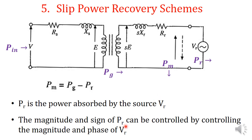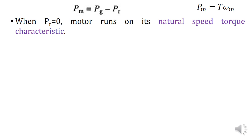The magnitude and sign of Pr can be controlled by controlling the magnitude and phase of Vr. By controlling the magnitude and phase of Vr we can control the magnitude and sign of Pr. We should keep in mind that Pr is the slip power in the rotor circuit, and by controlling the value of Pr we can control the speed of the induction motor.